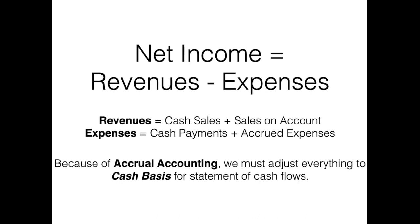There are two methods to creating a statement of cash flows: the indirect method and the direct method. The indirect method is currently required by GAAP. If you use the direct method, you still have to put the indirect method at the bottom of your statement of cash flows. The investing and financing sections are identical under either method — it's how you produce the operating activity section that makes these two methods different.